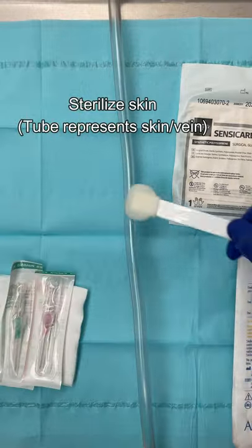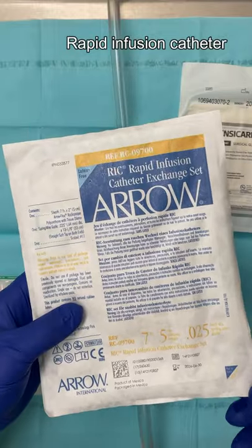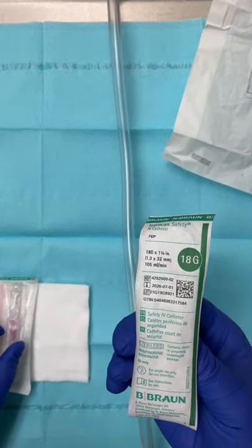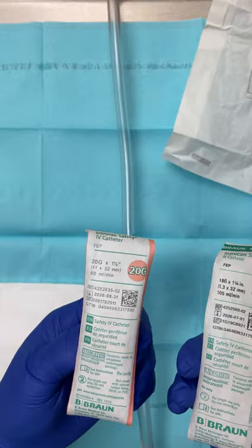In this video, I'm going to walk you through the sterile procedure of inserting a 7 French rapid infusion catheter capable of transfusing up to 750 cc's of fluid per minute.